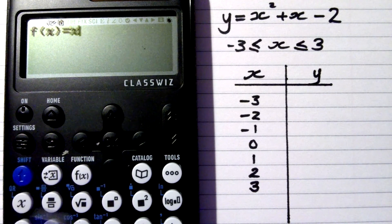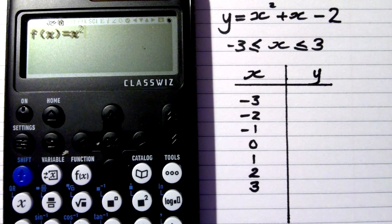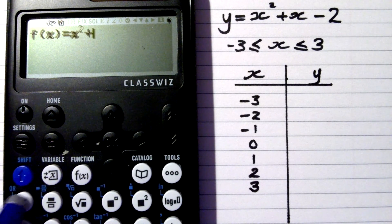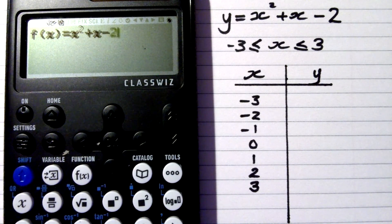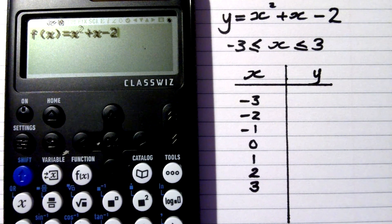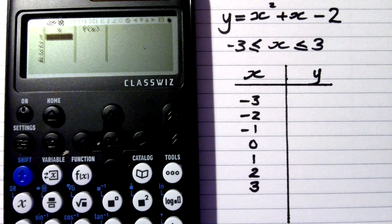It asks me to define the function. I do that with x — so it's x squared, then plus x, and now minus two. I'll just put in minus two, and press exe.